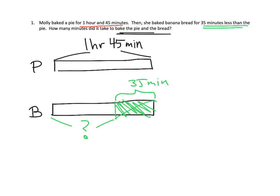So, we need to figure out what is the length of that bar diagram, that tape diagram for the bread. And then, the question is, how much time did it take to bake the pie and the bread? What's our strategy? Our strategy is gonna be, start with the pie, subtract 35 minutes, take these two numbers and subtract, that's gonna give us the bread. And then, once we have the bread, we're gonna take the pie and the bread, and we're gonna add them together, and that'll give us our answer.